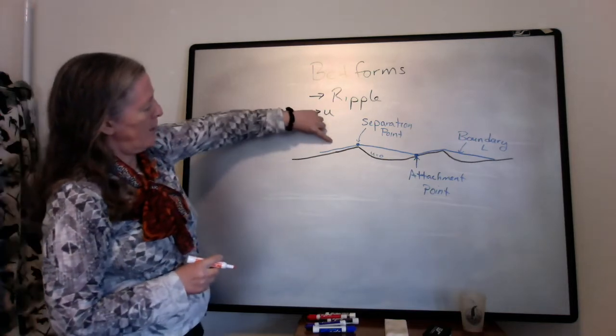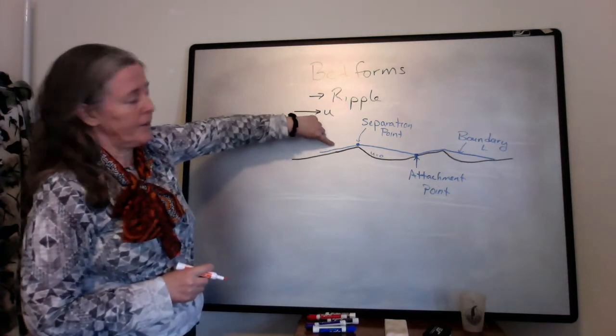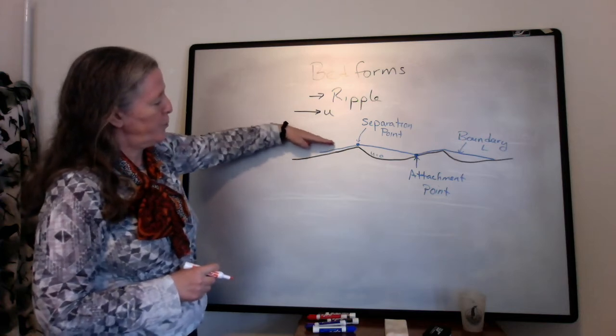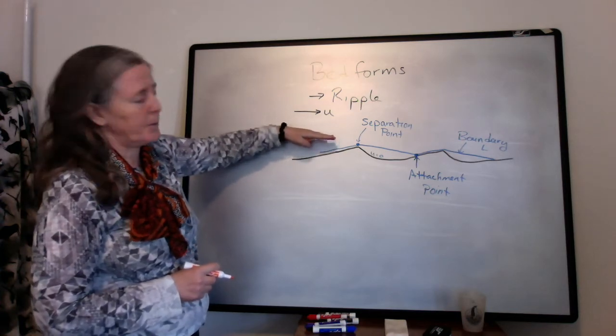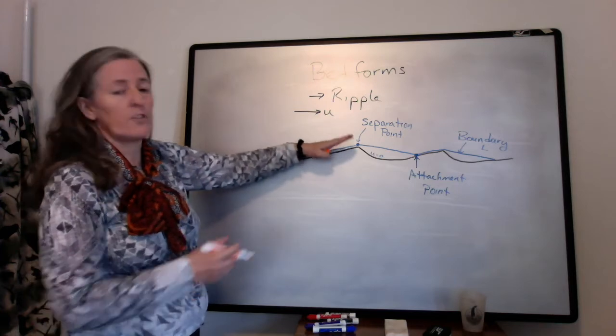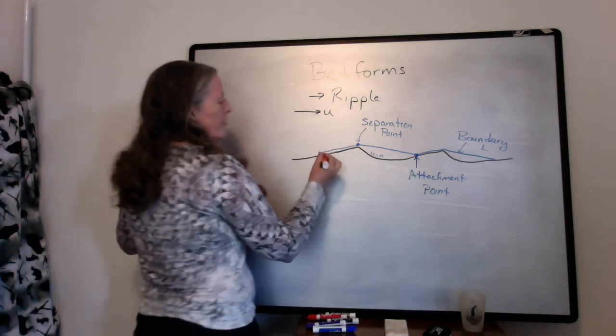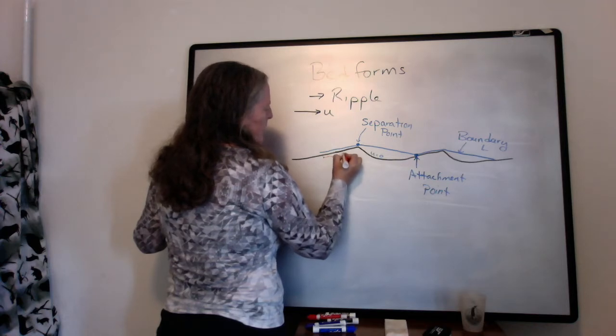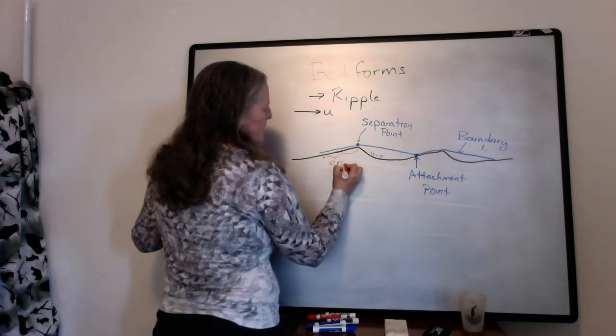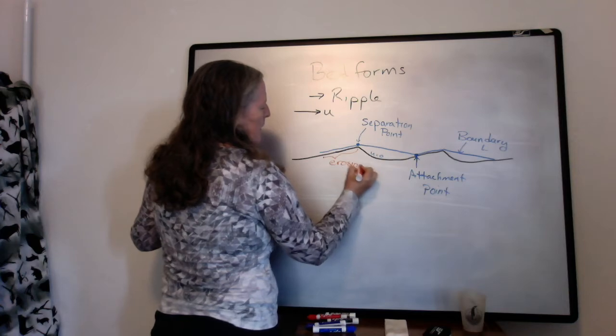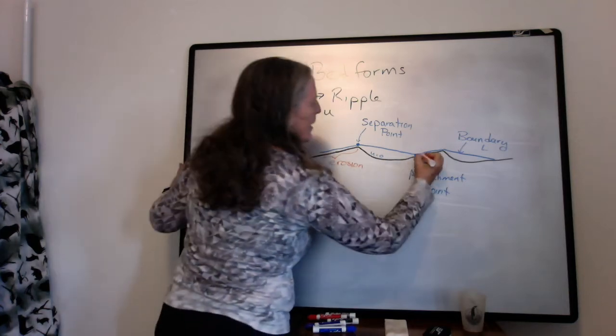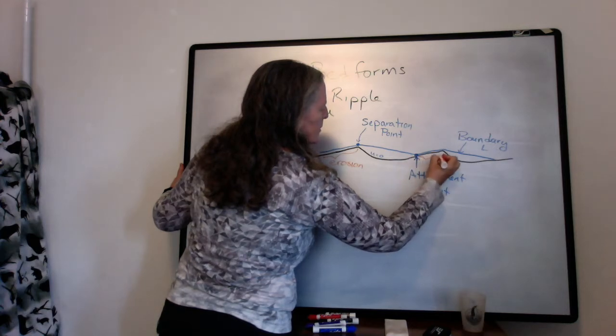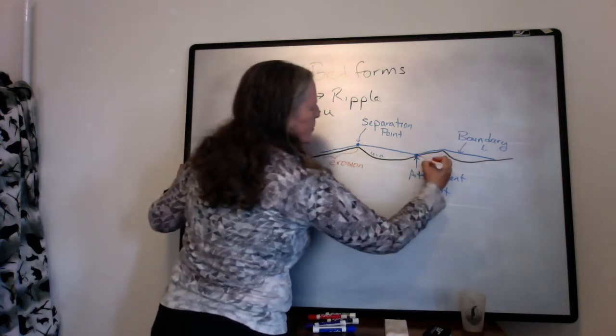However, we have the thin boundary layer on the upstream side, and the flow is pushing against that surface because it's sloping back upstream. So we get a lot of erosion of grains on this upstream side, and it happens between the attachment point and the separation point.